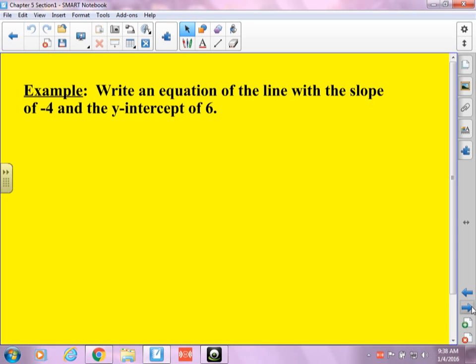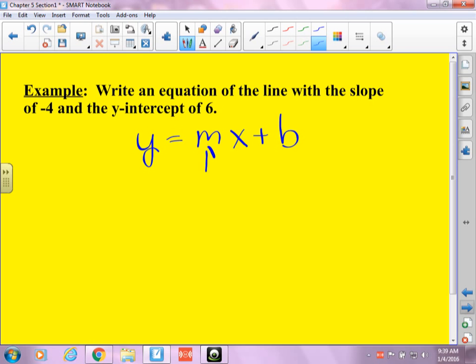So first of all, write an equation of a line with the slope of negative 4 and the y-intercept of 6. Well, let's review a little bit slope-intercept form. What is the equation? Y equals mx plus b. Notice how it's coming easy because we've done it, right? What letter stands for slope? Yes, my m. So my m is my slope. And what is my y-intercept? B. It is b.